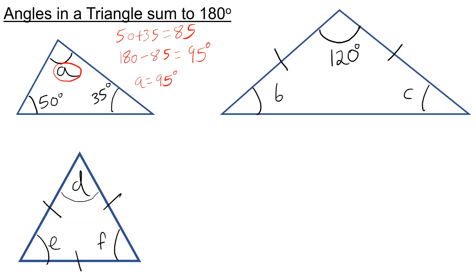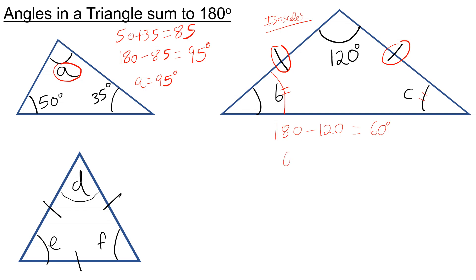In the second question, we have an isosceles triangle because both of these two sides are equal — that's what the straight lines mean. Because it's isosceles, B and C have got to be the same. So to work out B and C, I do 180 take away 120, which is 60 degrees, then split it equally by dividing by 2, giving 30 degrees. So B and C are both 30 degrees.